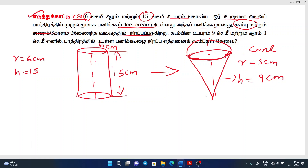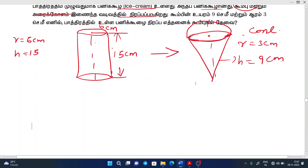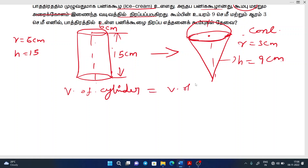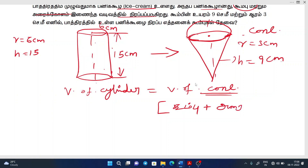The volume of the cylinder is equal to the volume of the cone. Volume of cylinder is equal to volume of the cone. Cone equals cone — so there are two formulas.